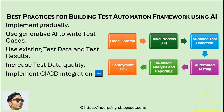The best practices for building a test automation framework using AI include the ones shown here. Implement gradually — start with small test cases and run pilot projects first. Use Generative AI in software testing to write test cases, test data, especially boundary values, and automated test scripts. Use existing test data and test results to train your AI, and increase test data quality for more accurate automation testing.